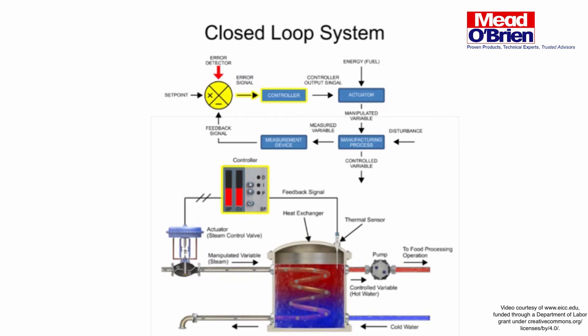The controller is the brain of the system. It receives an error signal as its input and provides an output signal to the final control element, or actuator, in this example. A signal from the controller causes the controlled variable to match the set point using the actuator. The flow valve represents the actuator, where steam flow is controlled.